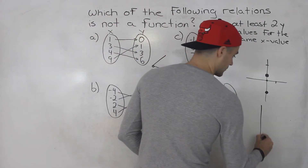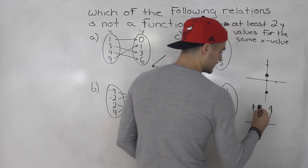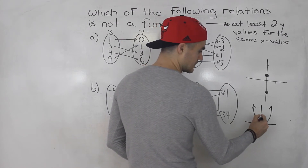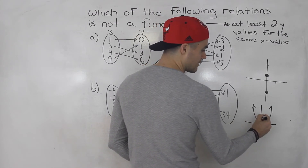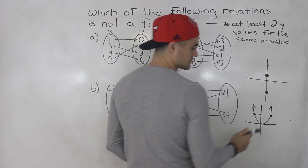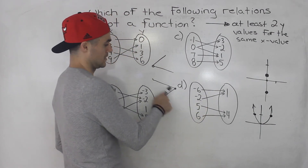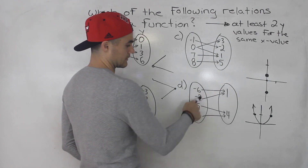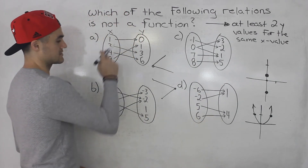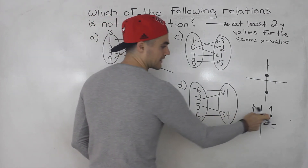A good example of that is the parabola. We know a parabola is a function that passes the vertical line test. Notice that for a certain y value there are two x values — and that's what this pattern means. So just because you see a single y value mapping to multiple x values, it doesn't mean it's not a function.